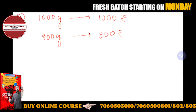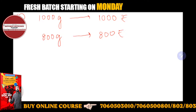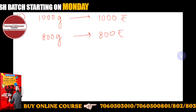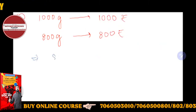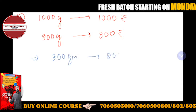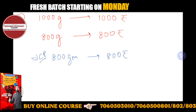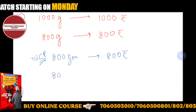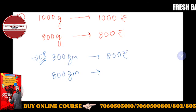Suppose my 1 kg saffron costs 1000 rupees — I bought it for 1000 rupees. Now what is the shopkeeper doing? 800 grams of saffron is worth 800 rupees. But the shopkeeper is selling 800 grams as if it were 1 kg, because you don't know it's only 800 grams — he's telling you it's 1 kg.